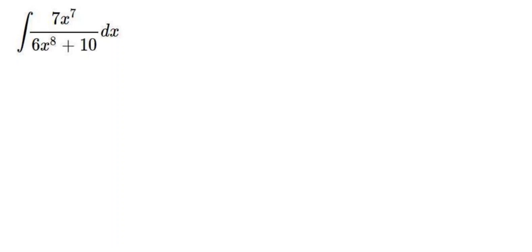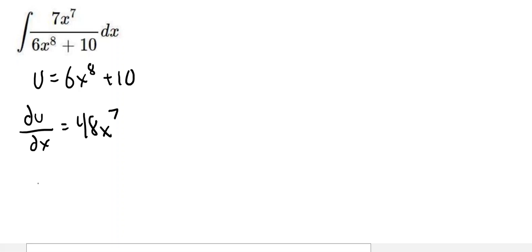But what we do have is a denominator that we could let be equal to u. If we let that be equal to u, we would then take the derivative of that, like we always do, du/dx, which is going to be 48x^7. Then solving that for dx, we would have du over 48x^7.